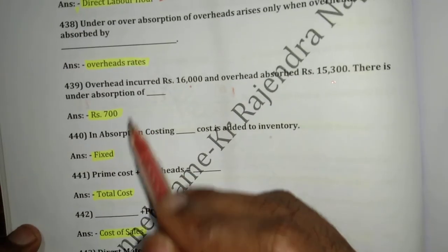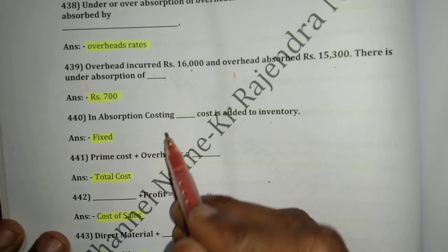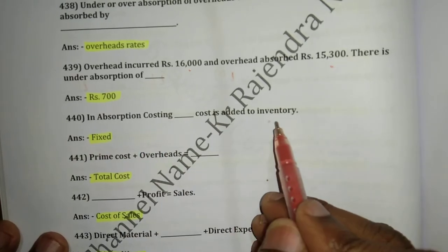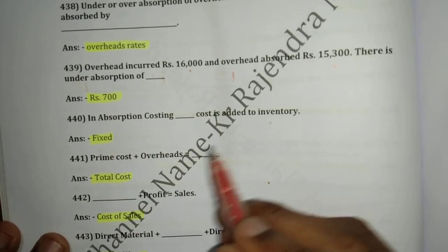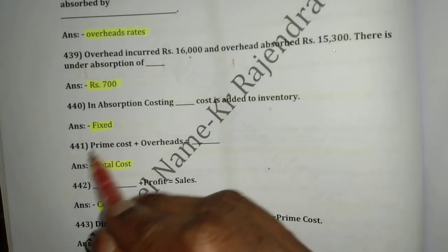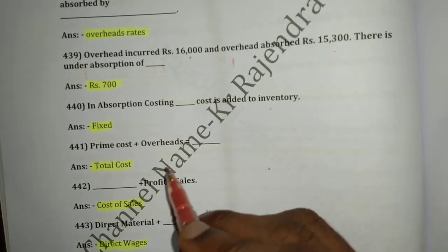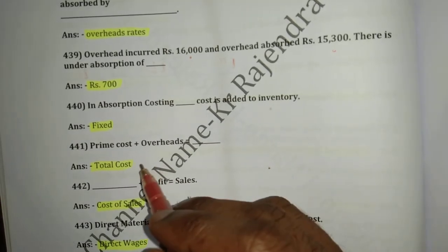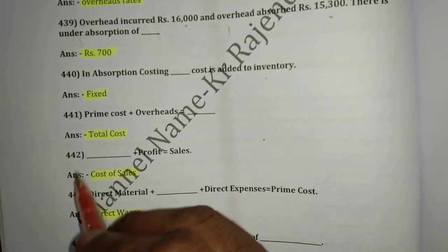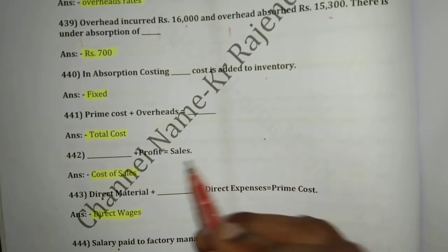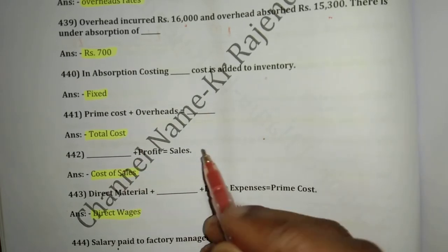Question number 440: In absorption costing, fixed cost is added to inventory. Question number 441: Prime cost plus overhead is equal to total cost. Question number 442: Cost of sales plus profit is equal to sales.